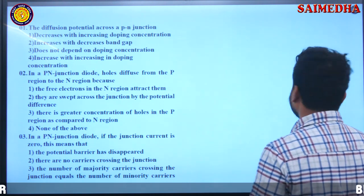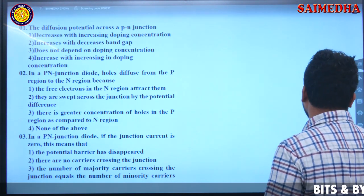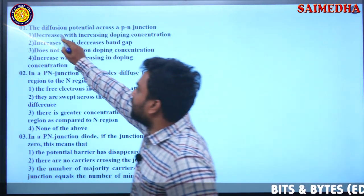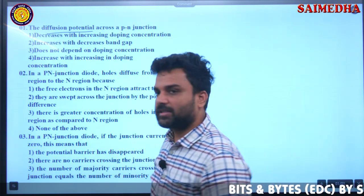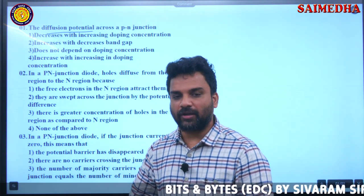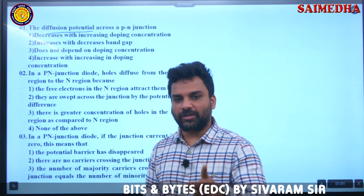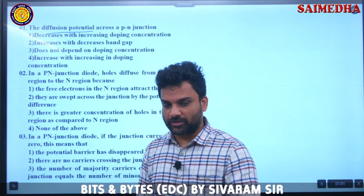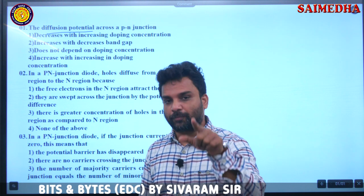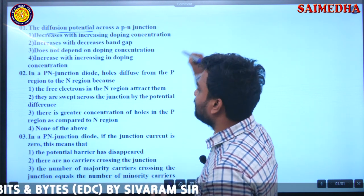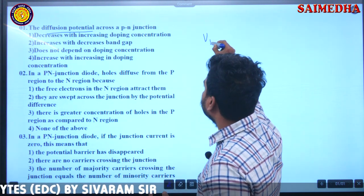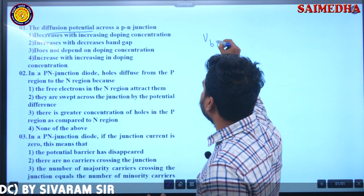Students, diffusion potential is also called barrier potential, threshold potential, contact potential, inbuilt potential, VBI. So there are a lot of different names for it.